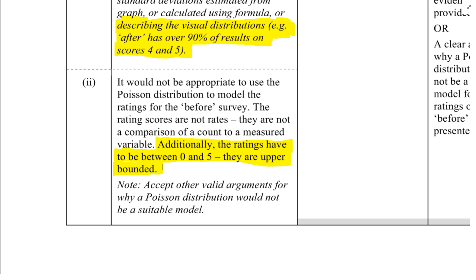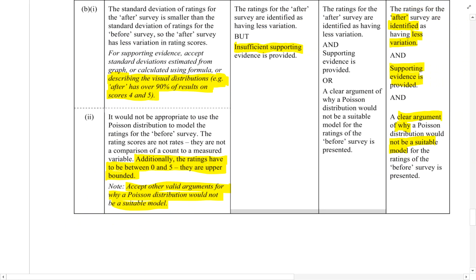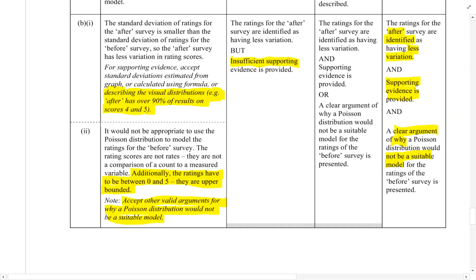So it wouldn't be appropriate for that reason as well. No, accept other valid arguments for why a Poisson distribution would not be a suitable model. To practice more of these questions, a good idea is to do more past papers. The way to get to the past papers is to go to the NZQA website.